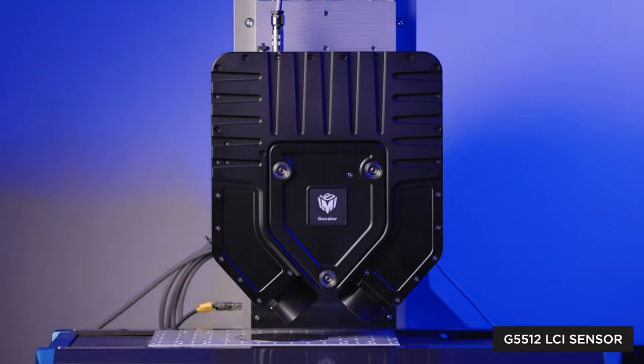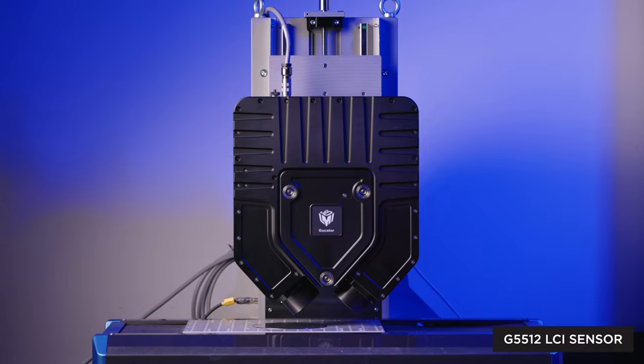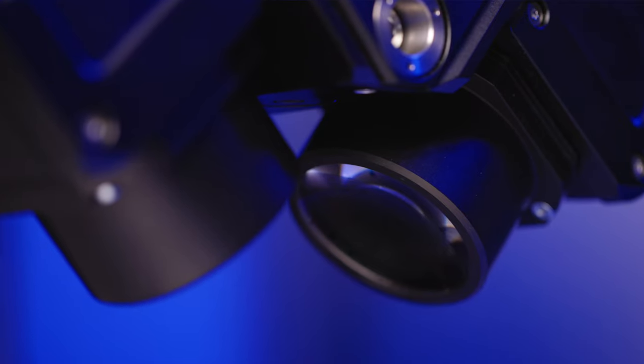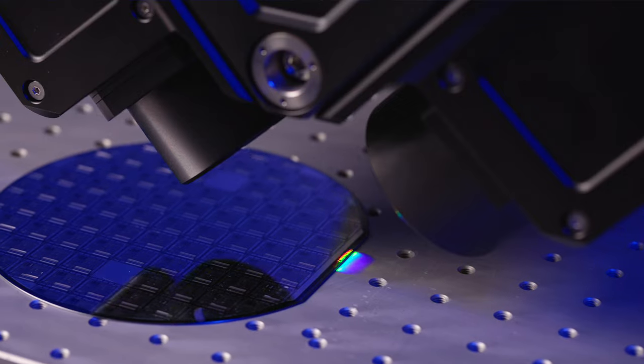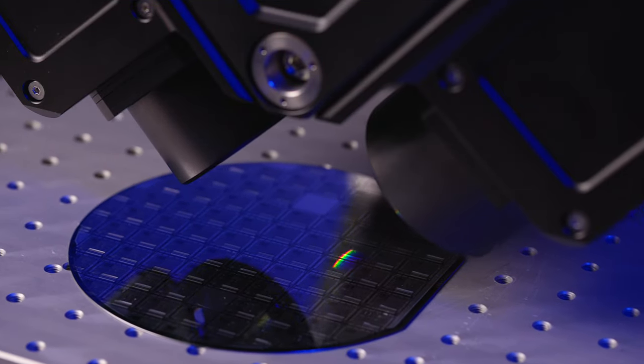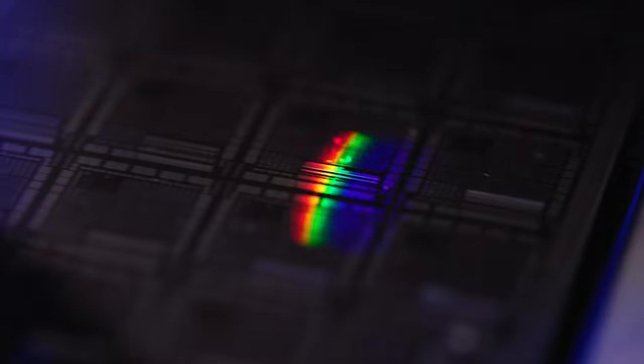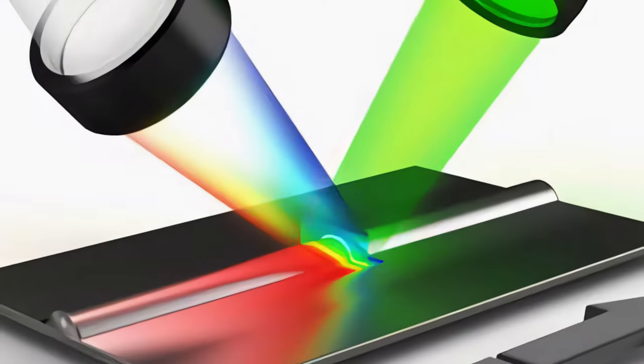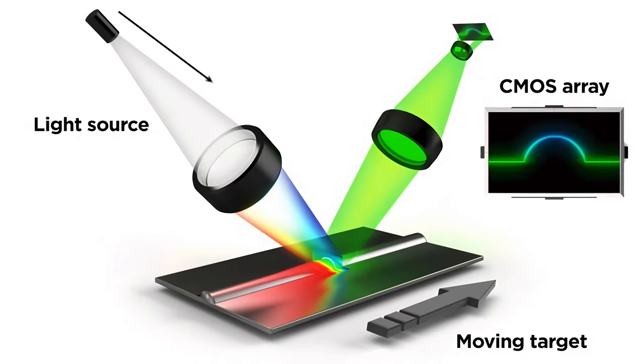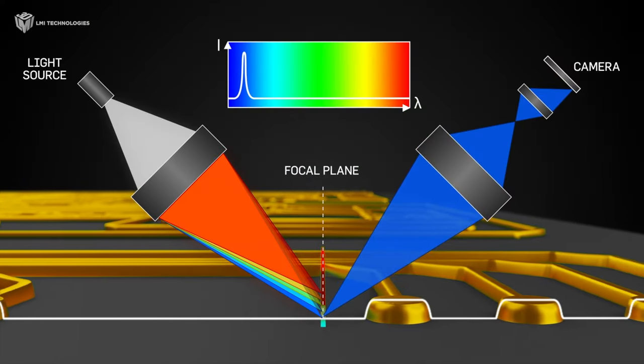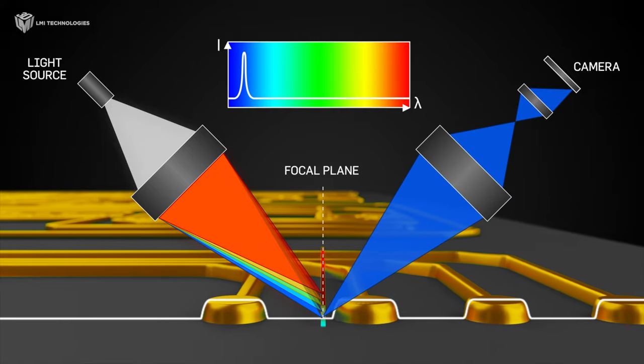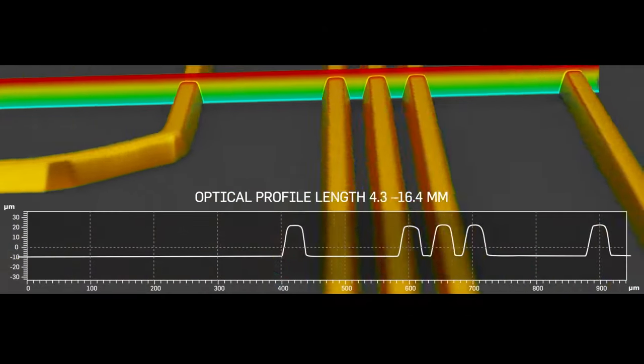This is a G5512 line confocal imaging sensor. With a patented dual-axis design, it can measure microscopic scale dimensions and tomographic structures with high accuracy and speed. It works by projecting a thin line of light onto a target surface and capturing the reflected light with a line-shaped confocal aperture. The confocal aperture filters out any out-of-focus light and only allows the in-focus light to reach the sensor.